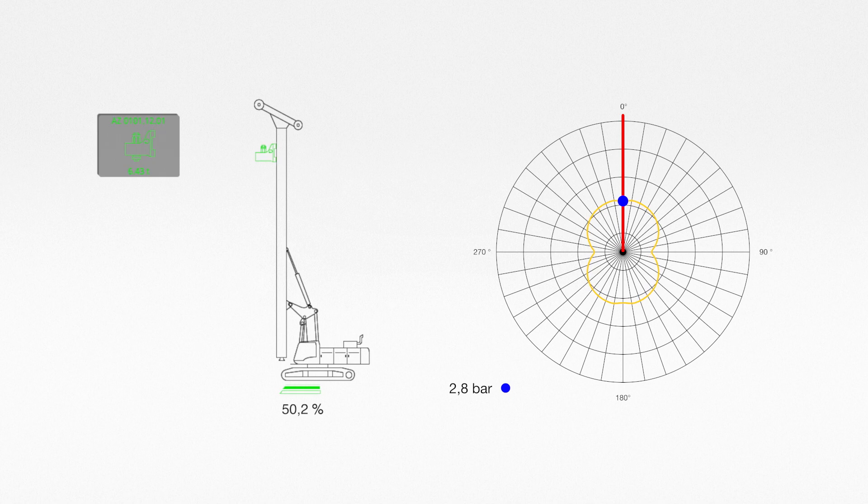It calculates the ground pressure based on the weights of the individual components and tools, and considers the current winch line pull.